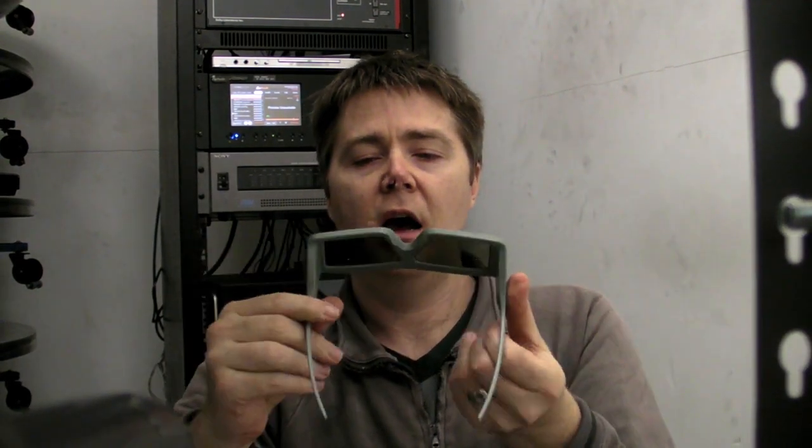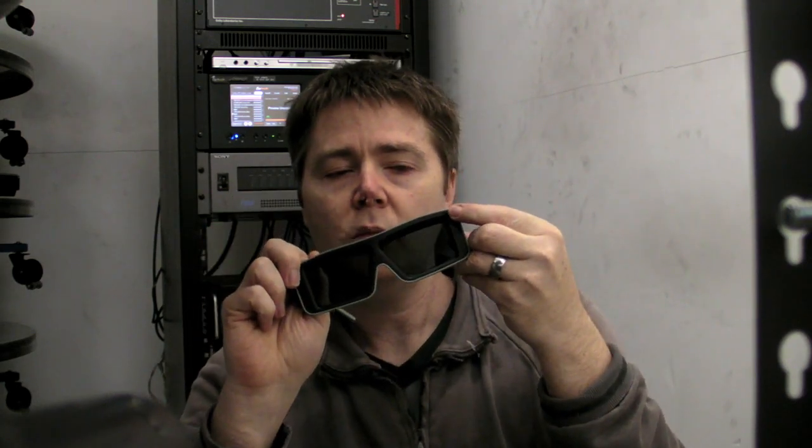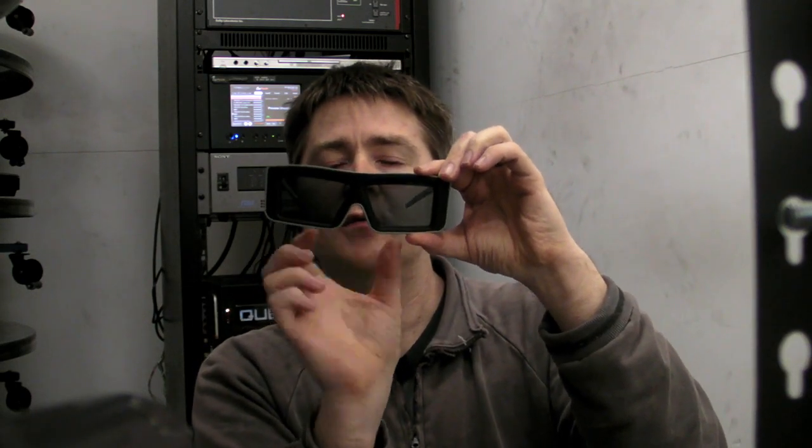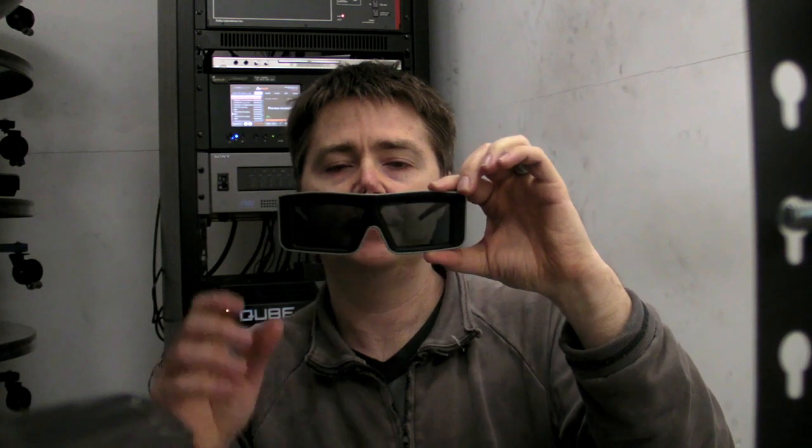These are LCD-based 3D glasses. There's a little detector in the corner here, and there is an infrared flashing device which flashes out a pulse into the auditorium. These detectors pick up that pulse and make the glasses switch left to right, so you can't see out of one and can't see out of the other.